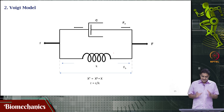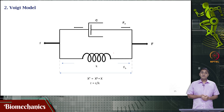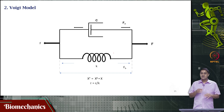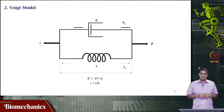Just by examining this model, I can immediately see that the response is going to be qualitatively different. Previously, the force felt by the two elements in the Maxwell model was the same, but the deformations were different, and we summed the deformations to get the total deformation. But in the Voight model, the deformation felt by the two elements will be the same, but the forces will not be the same.